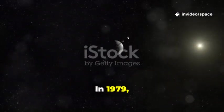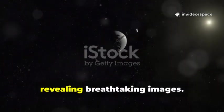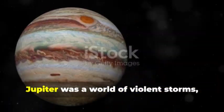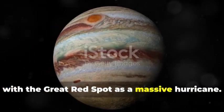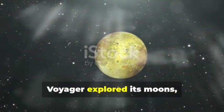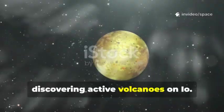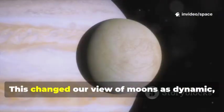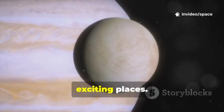In 1979, Voyager 1 reached Jupiter, revealing breathtaking images. Jupiter was a world of violent storms, with the great red spot as a massive hurricane. Voyager explored its moons, discovering active volcanoes on Io. This changed our view of moons as dynamic, exciting places.